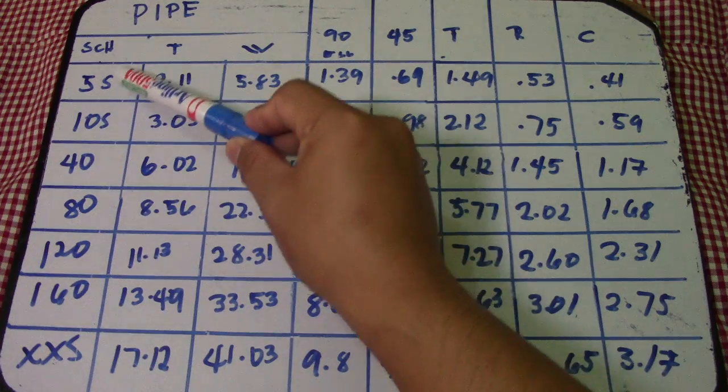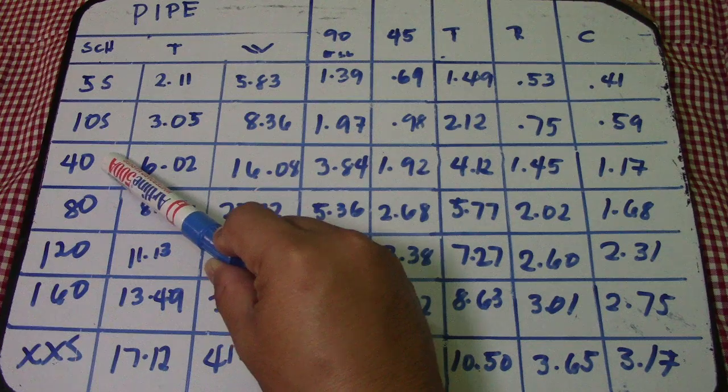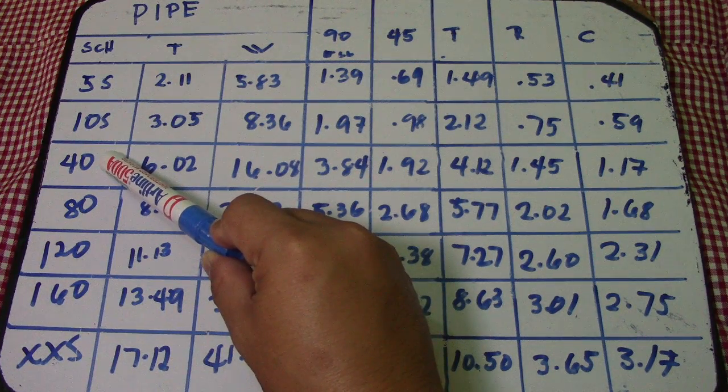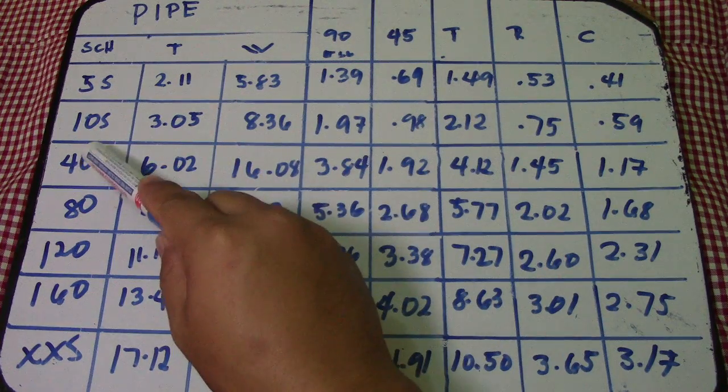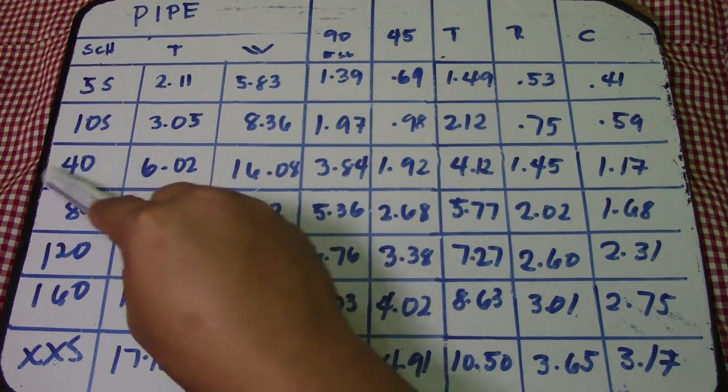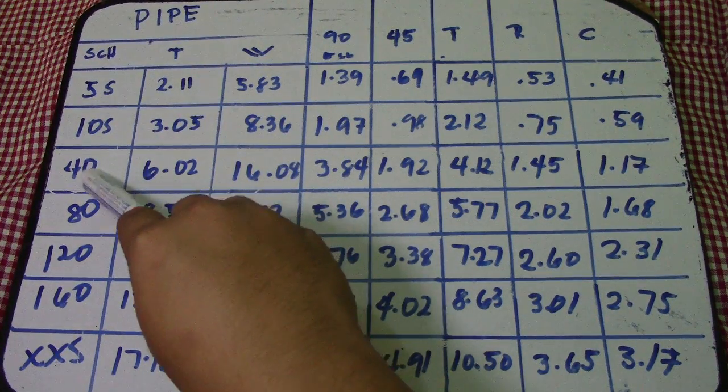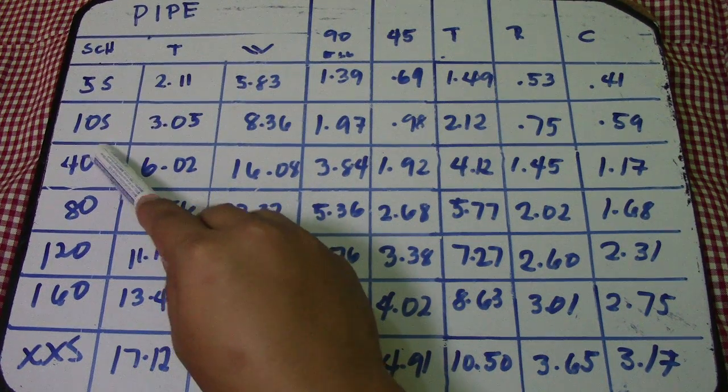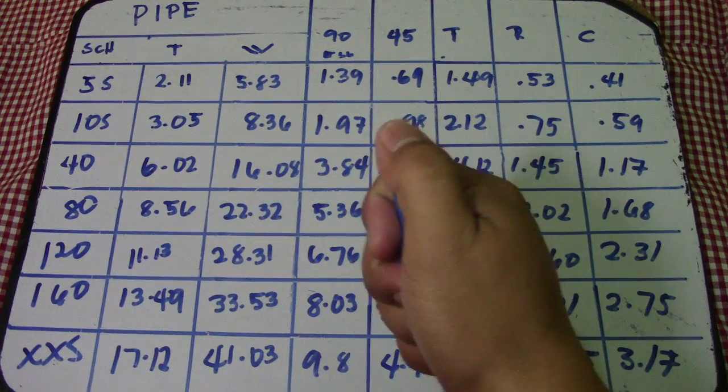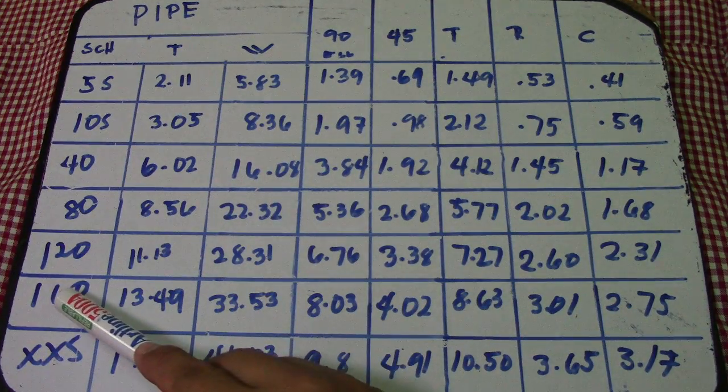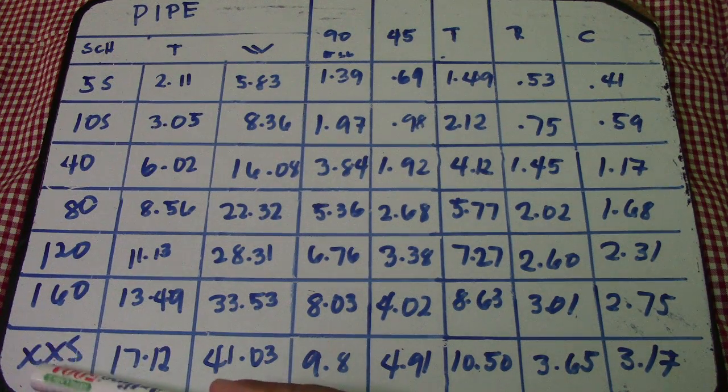First column we have 5S, 10S. This 40 is standard. We have 40 and also 40S, 80, 80S, 120, 160, and double XXS. This is double extra strong - very strong for the pipe.